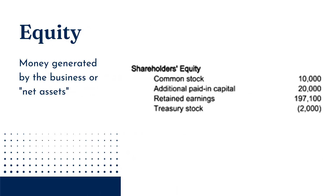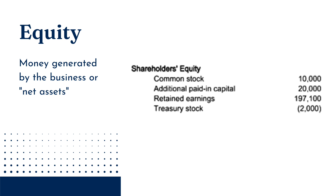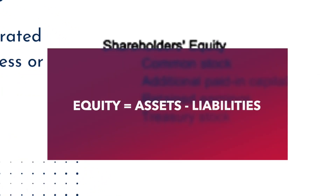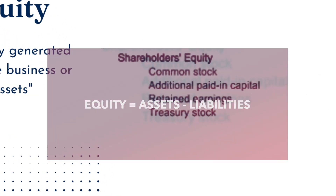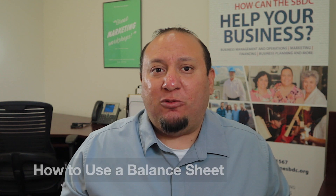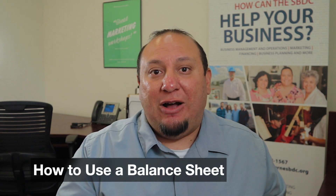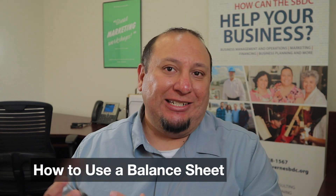Our final section is equity, sometimes called shareholders' equity if you have shareholders, like in a corporation, or simply owners' equity if you're a sole proprietor. Equity is the total amount of money generated by the business or put into the business by its owner or shareholders. Equity is the net assets, illustrated by this formula: equity equals assets minus liabilities. The balance sheet is a historical snapshot of how the business is doing at a single point in time.